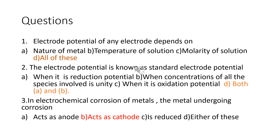The next question: In electrochemical corrosion of metals, the metal undergoing corrosion — options: acts as anode, acts as cathode and is reduced, or either of these. The answer is it acts as cathode. For example, if we dip an iron rod in copper sulfate solution, the Cu²⁺ ions get deposited on the iron rod — that is corrosion — so it acts as cathode only. These are some questions that come under previous year PGT chemistry and our coming PGT chemistry also.